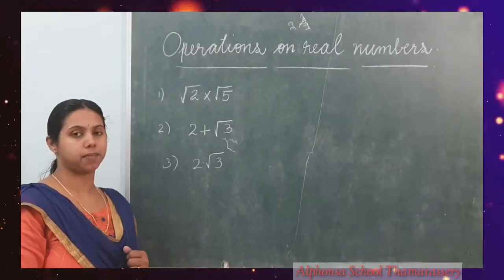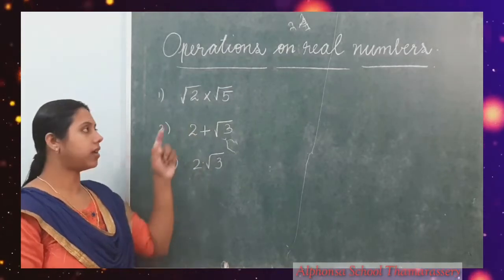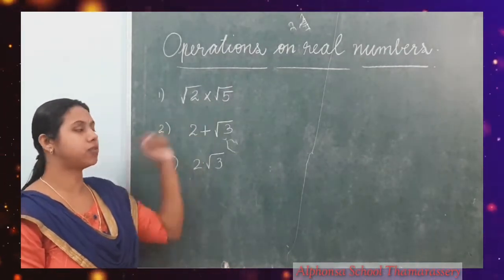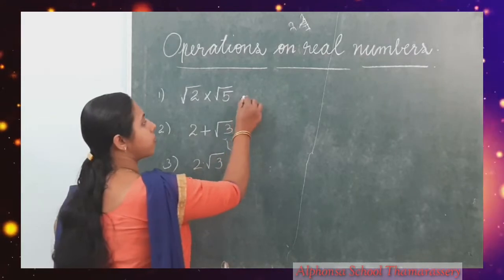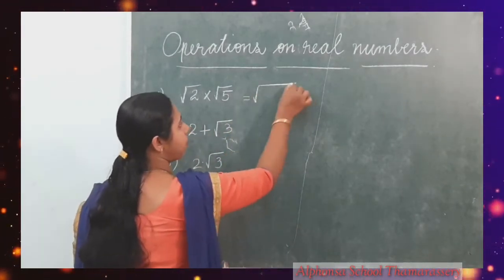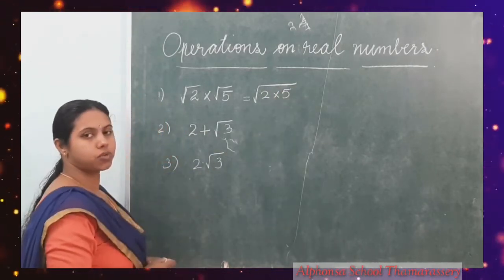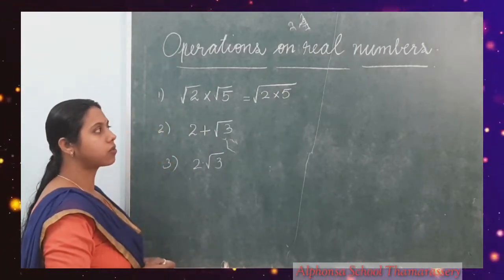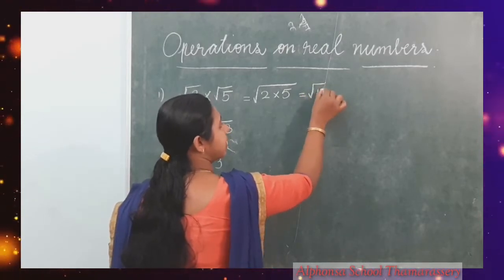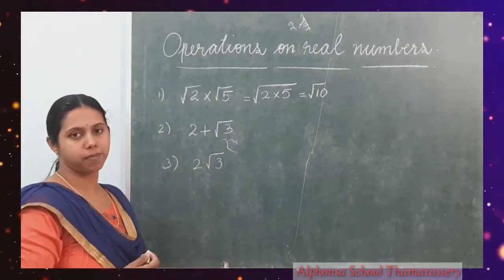Let us see a few more examples. Root 2 into root 5 — here, two irrational numbers. We are multiplying these two irrational numbers. So root 2 into root 5, we can write it as root of 2 into 5, which is equal to root 10.